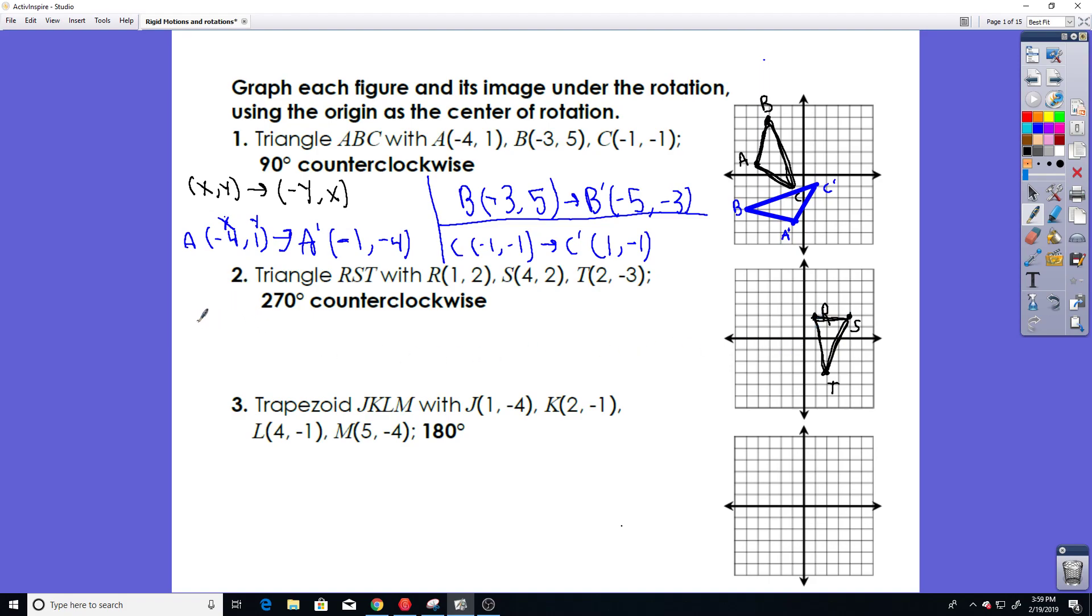Okay. Now, the rule for a 270 degree rotation goes like this. You still have your coordinate (x, y). And then after a 270 degree rotation, it's going to be converted into (y, -x).